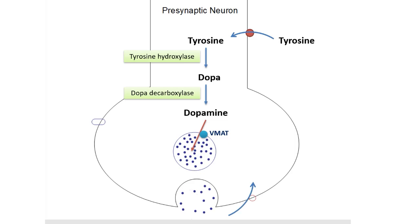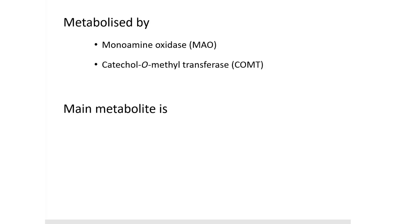Later, it is taken back into the cell through dopamine transporters. Dopamine is metabolized by two enzymes: monoamine oxidase or MAO and catechol-O-methyltransferase or COMT. The main metabolite is homovanillic acid or HVA. The amount of HVA present in the brain is used as an index of dopamine turnover. The sulfated conjugate is also excreted in urine, so urine levels of sulfated conjugate of HVA are also used as an index of dopamine turnover in the brain.